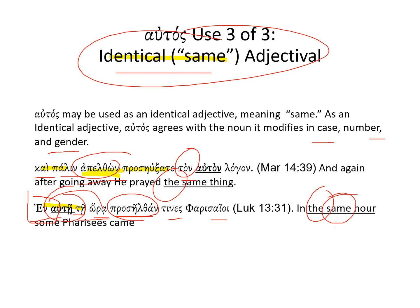So we have these three uses of αὐτός: the first one as a pronoun, the second one as an intensifier, and the third one as a repetitive identical adjective.